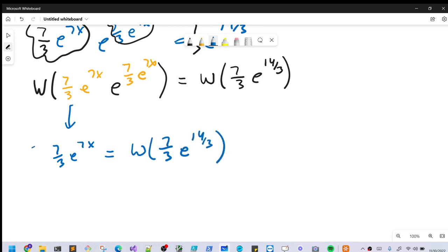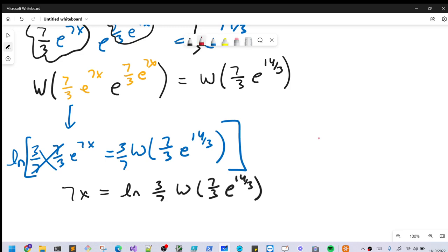Then we can multiply a 3 sevenths on both sides. That'll cancel there, giving us a 1. And then we can take from here, we can take the natural log on both sides. I'm just going to kind of show we're doing it on both sides there like this. But then on the left side, natural log of e to the 7x is just going to be 7x. So we're going to have 7x equals natural log 3 sevenths, Lambert W 7 thirds, e to the 14 thirds.